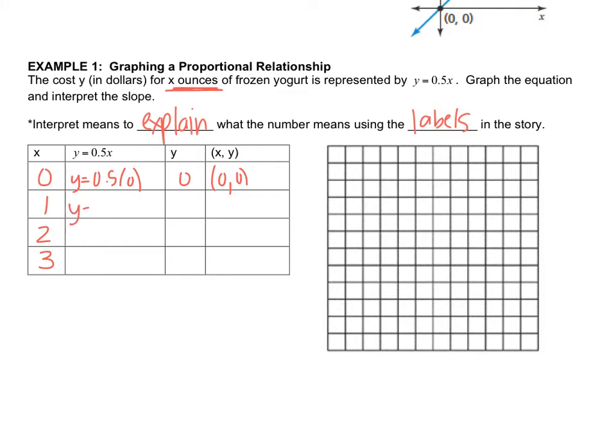We have y equals 0.5 times 0, which is just 0, so that's the point 0, 0. Then we have y equals 0.5 times 1, which is 0.5, so that's 1, 0.5. Then we plug in 2, which gives me 1, so I have 2, 1. The last one is 0.5 times 3, which gives me 1.5, so that's the point 3, 1.5.